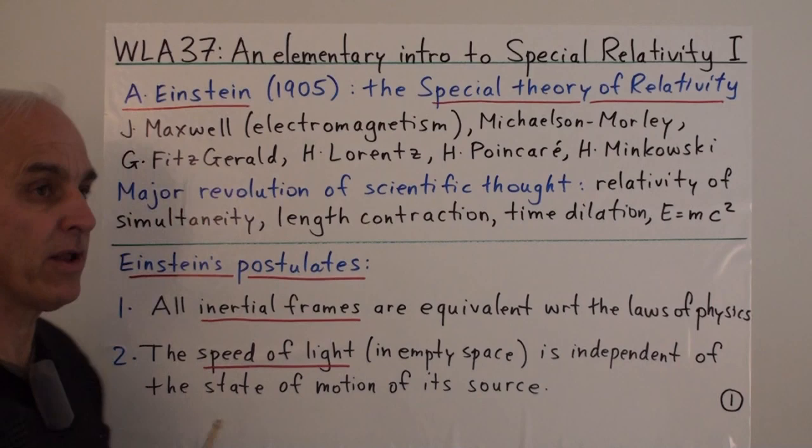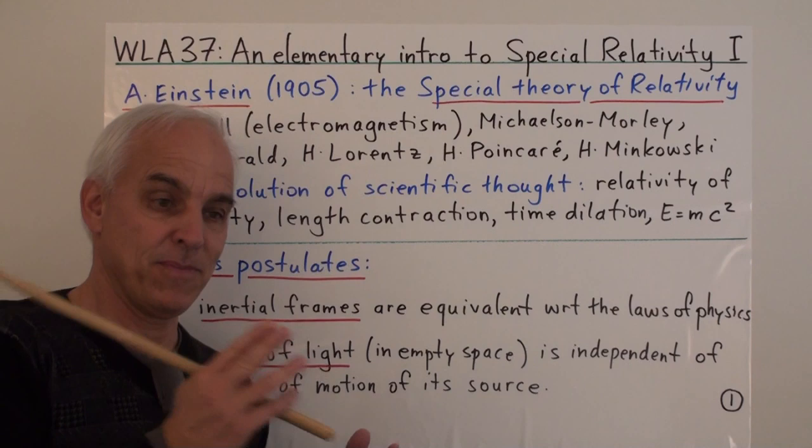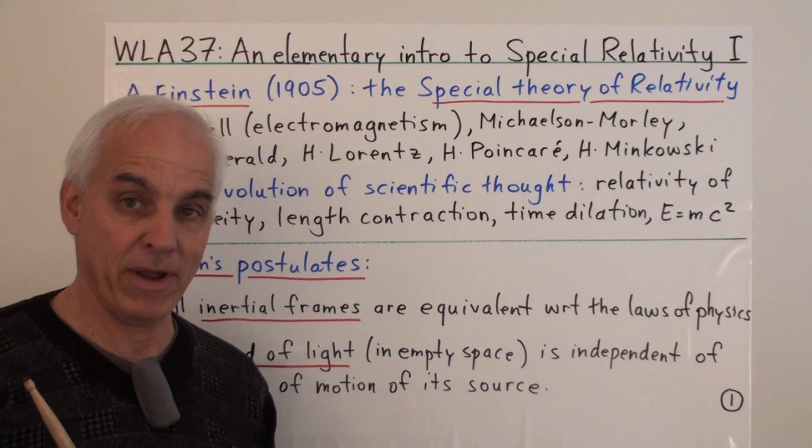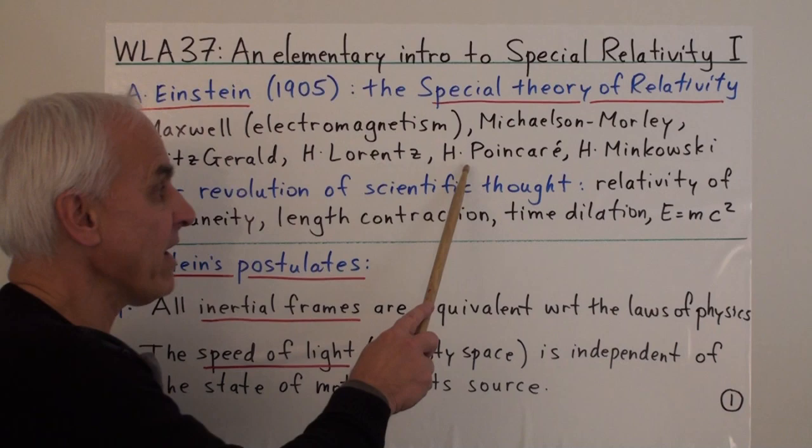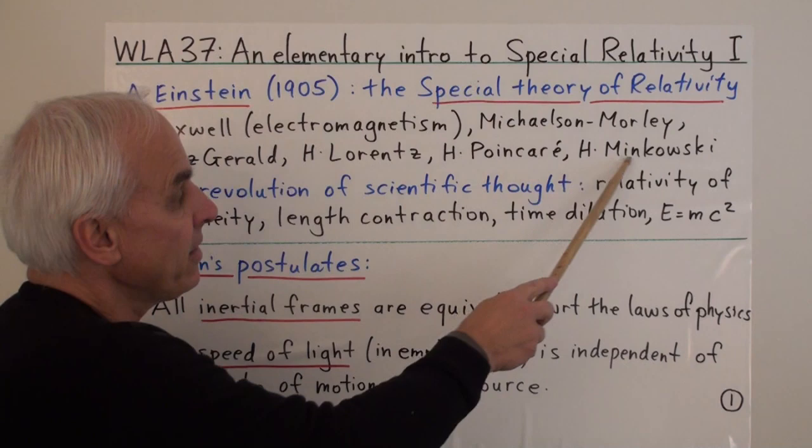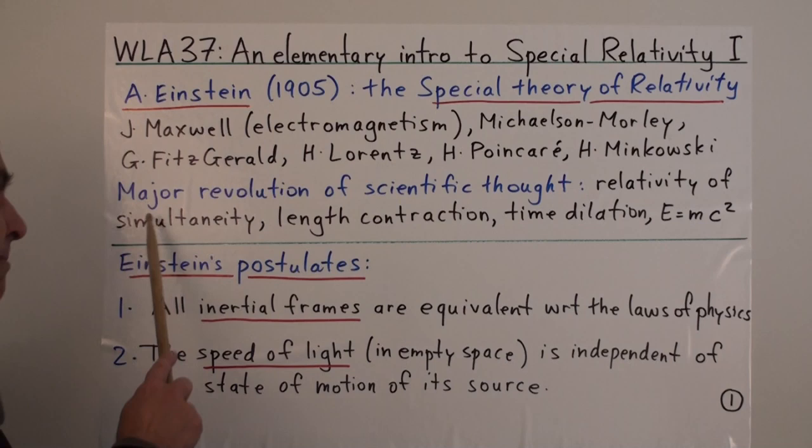And it was based on or had connections with quite a lot of previous work in physics before that. In particular, Maxwell's theory of electromagnetism, so-called Maxwell's equations. The experiment of Michelson and Morley that showed that essentially there was no ether, that the velocity of light seemed to be the same, both in the direction of the Earth's orbit and transverse to it. Work of Fitzgerald and Lorentz on the symmetries of Maxwell's equations, which had also been investigated by the great mathematician Henri Poincaré. And then after Einstein, Hermann Minkowski came along and reformulated some aspects of special relativity in a somewhat more geometrical way involving what we now call space-time.